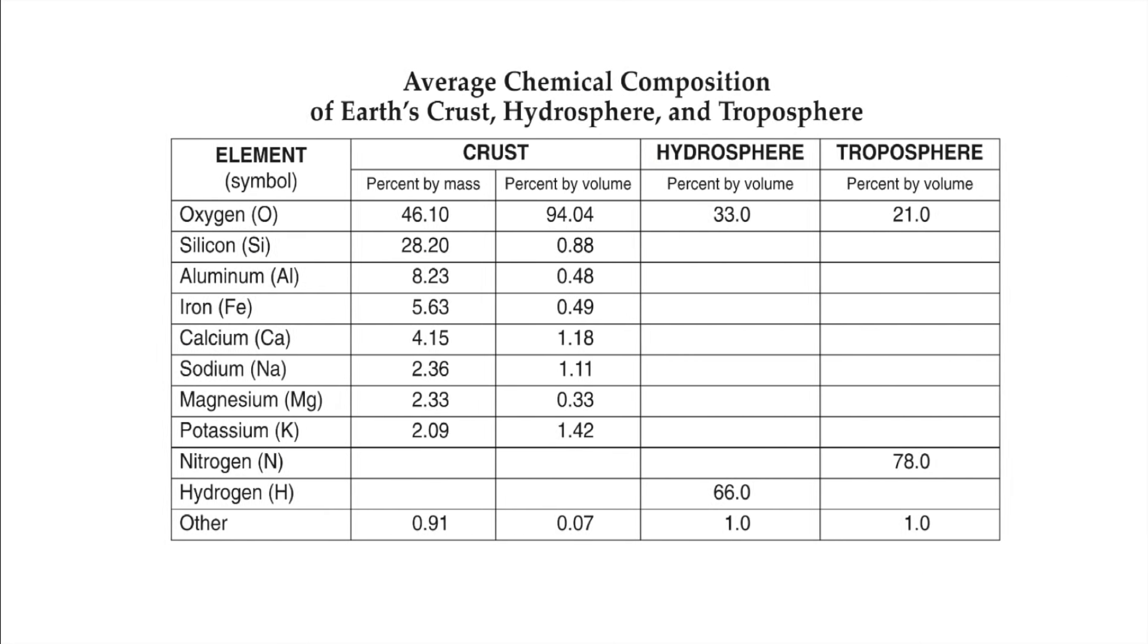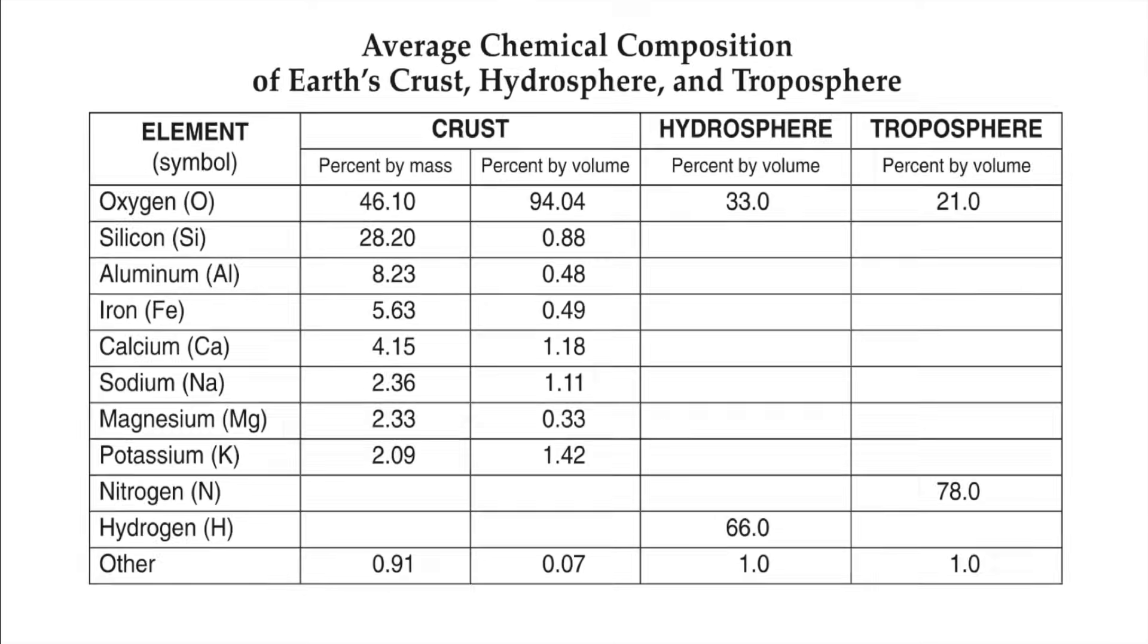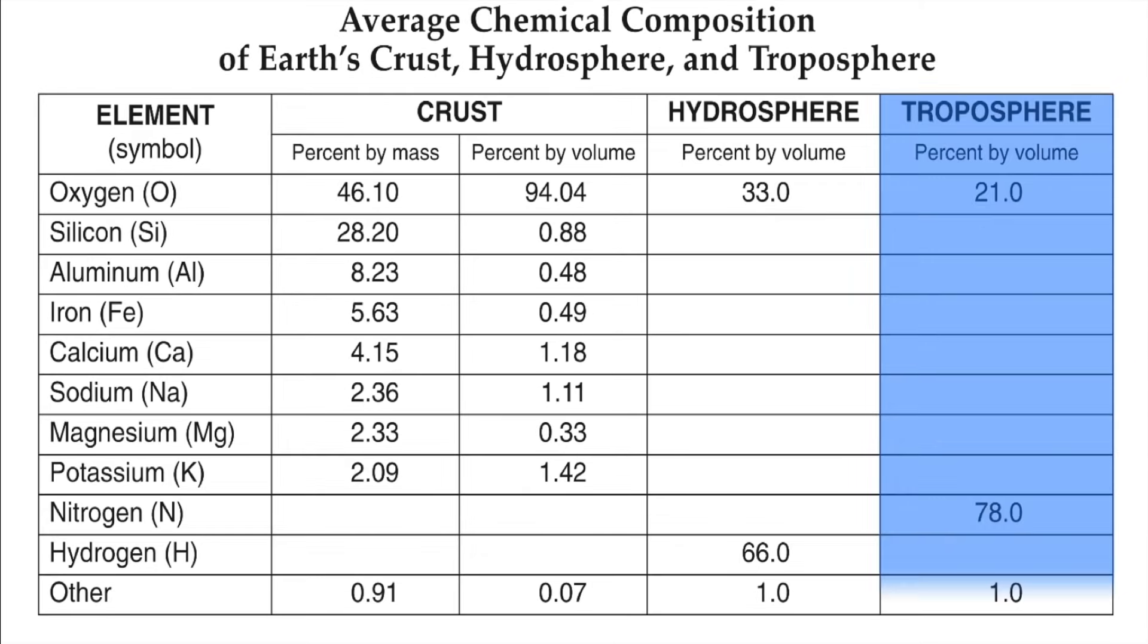You can find these numbers on page one of your Earth science reference tables on the average chemical composition chart. You have to look at the right-hand column where it says troposphere. That's the lower layer of our atmosphere, and you can see it's composed of nitrogen, oxygen, and then other elements.